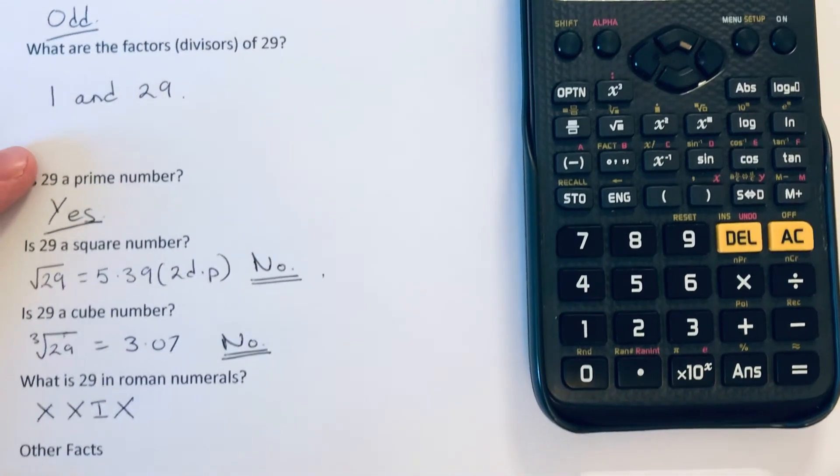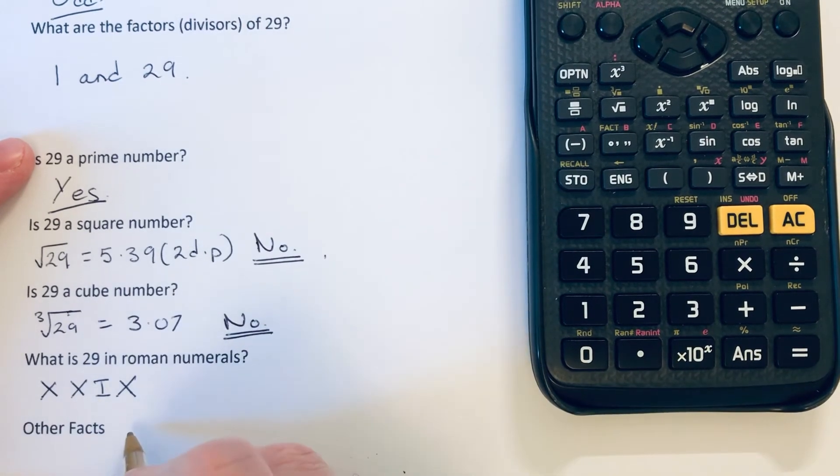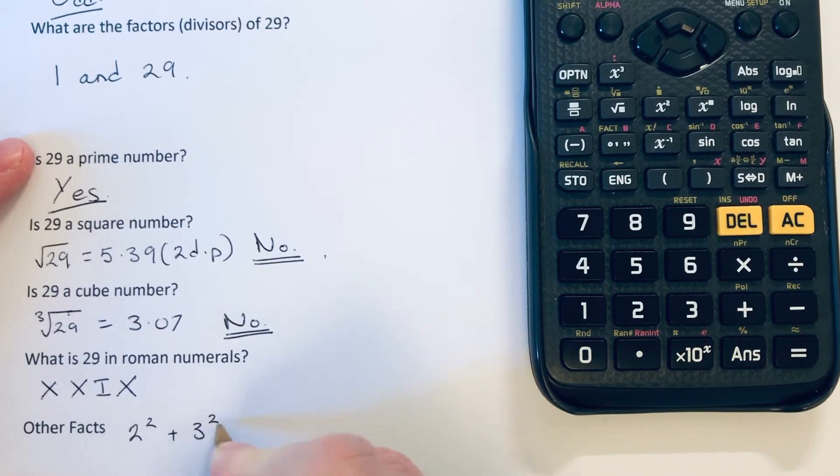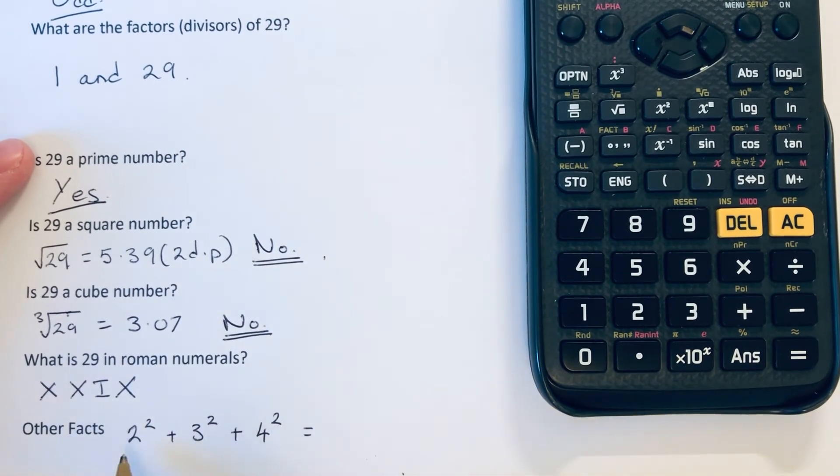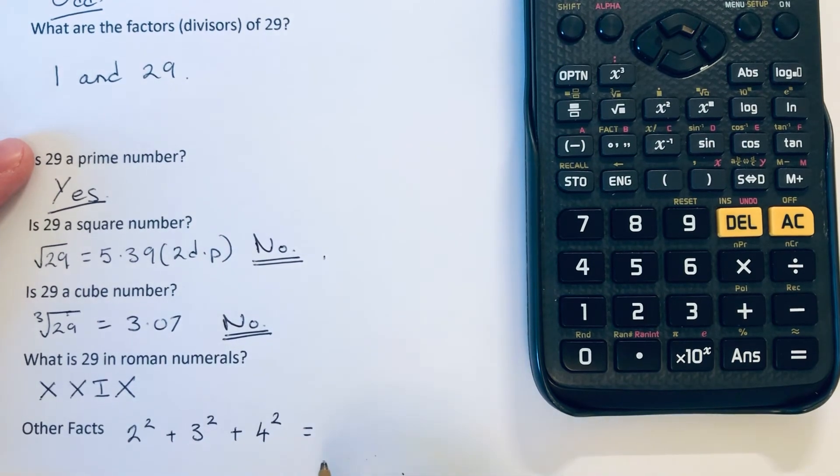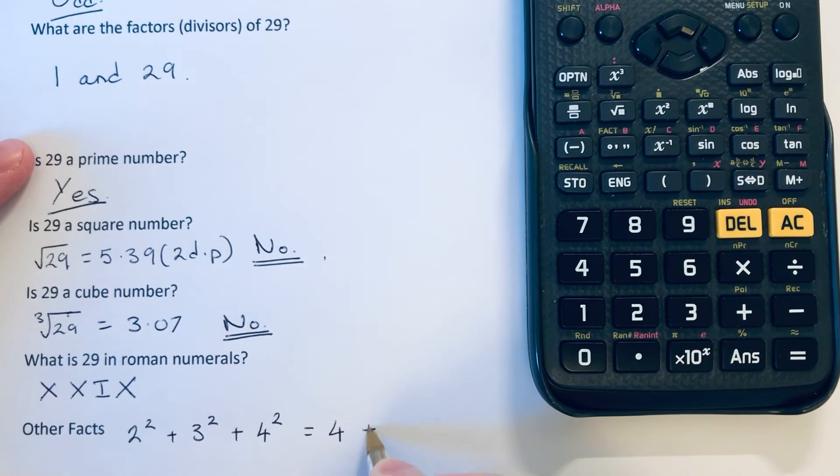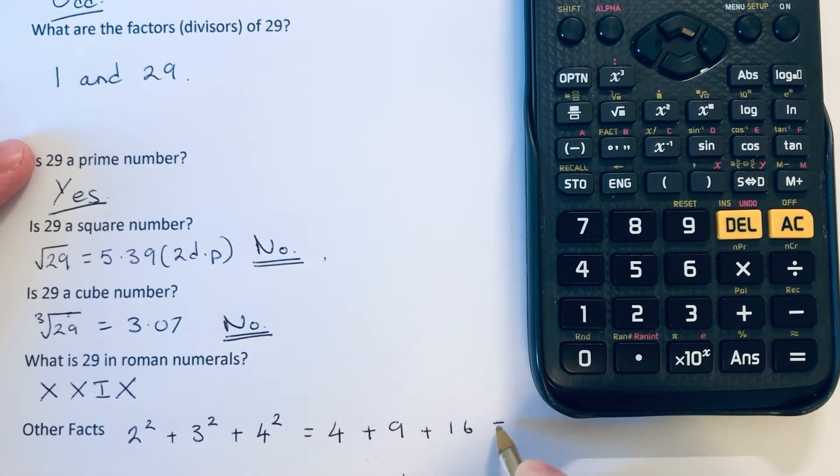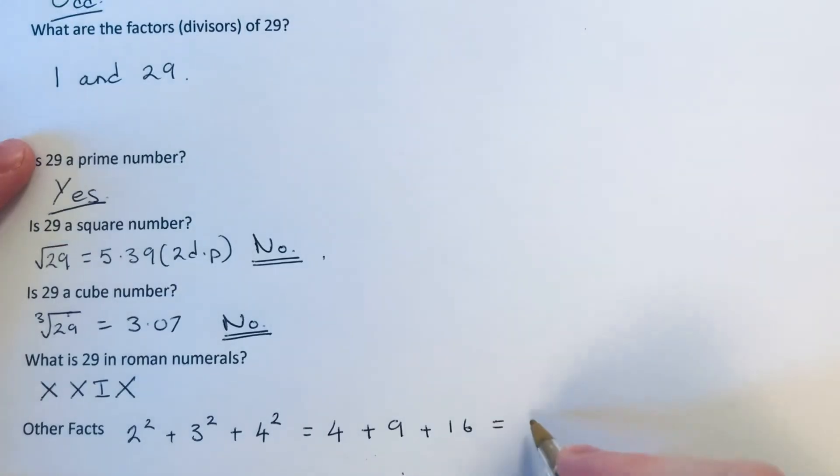And finally, what are the other facts of 29? Well, we can write 29 as 2 squared plus 3 squared plus 4 squared. So it's the sum of three consecutive square numbers. So if I just work that one out, 2 squared is 4, 3 squared is 9, 4 squared is 16. And if we add those numbers up, we get the answer 29.